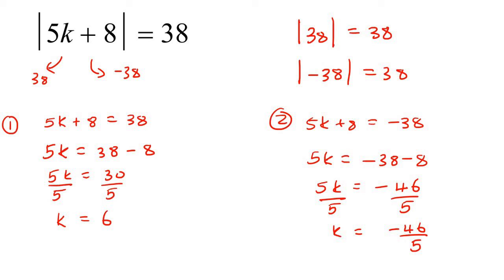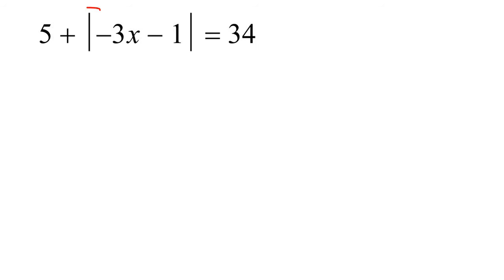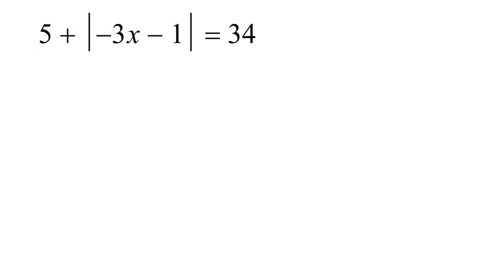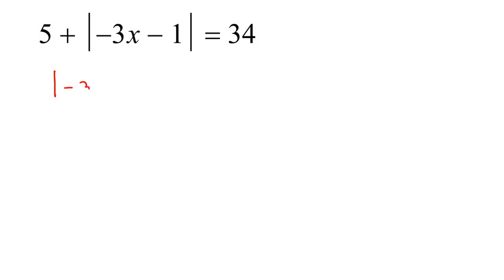Up till now, we've only been looking at Type 1 absolute value equations where the absolute value was always by itself. Now we're going to look at examples where it is not by itself. Can you see that? So step 1 is to always make sure it is by itself — we need to move this 5 over to the other side. Since it's positive, it becomes negative on the other side: the absolute value of negative 3x minus 1 equals 34 minus 5, which is 29.